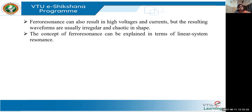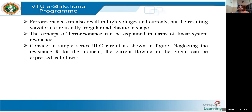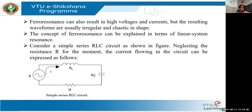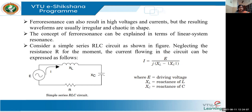The concept of ferroresonance can be explained in terms of linear system resonance. Taking a simple RLC series circuit example, we know that resonance occurs when XL equals XC. If we neglect the resistor, the current equation becomes E divided by j(XL minus XC). So there's a difference between both the reactances.